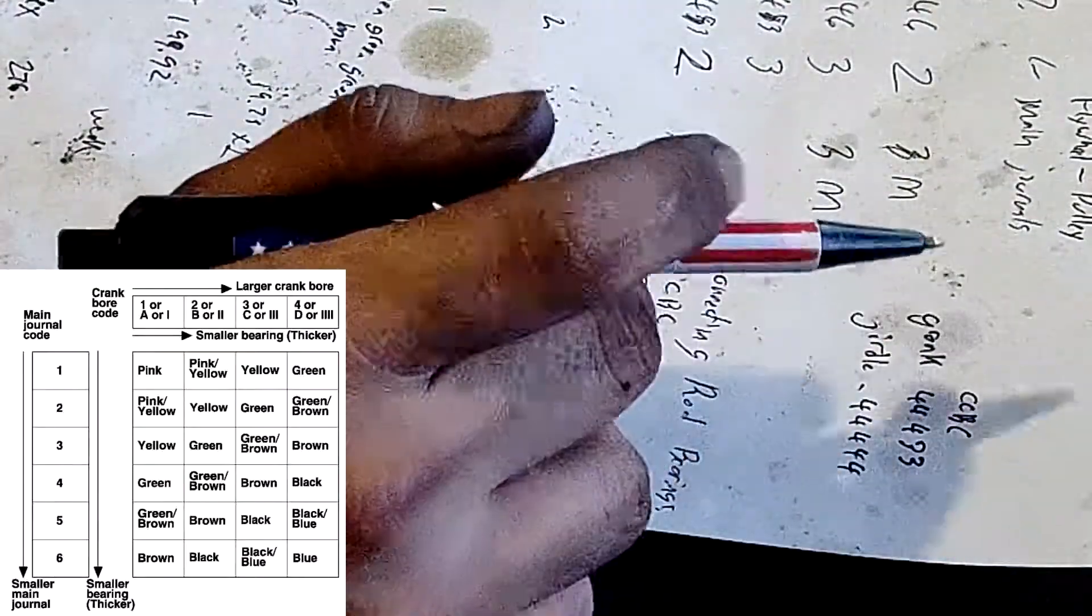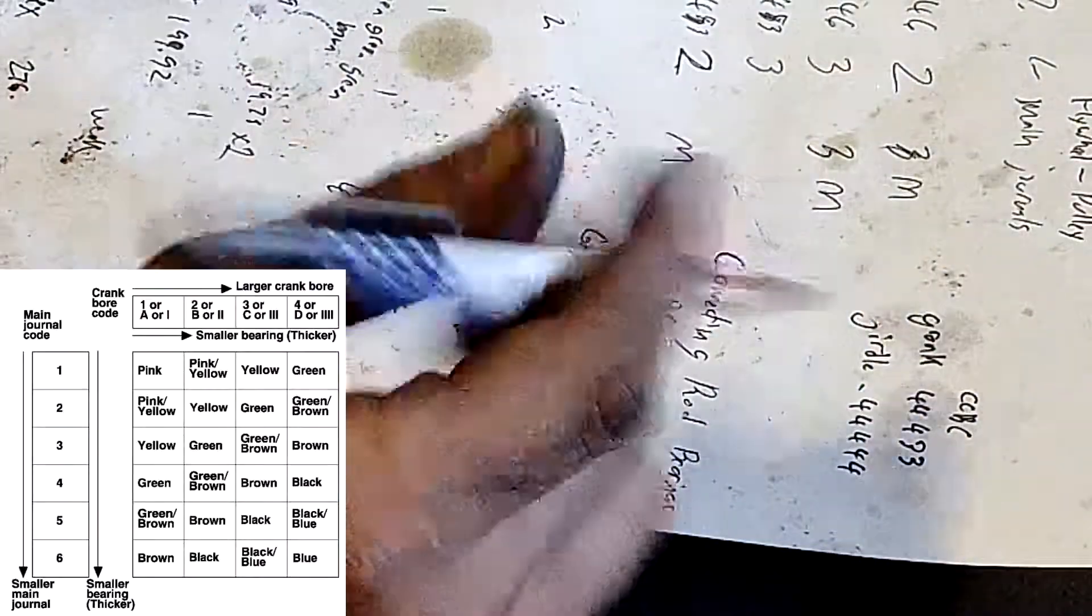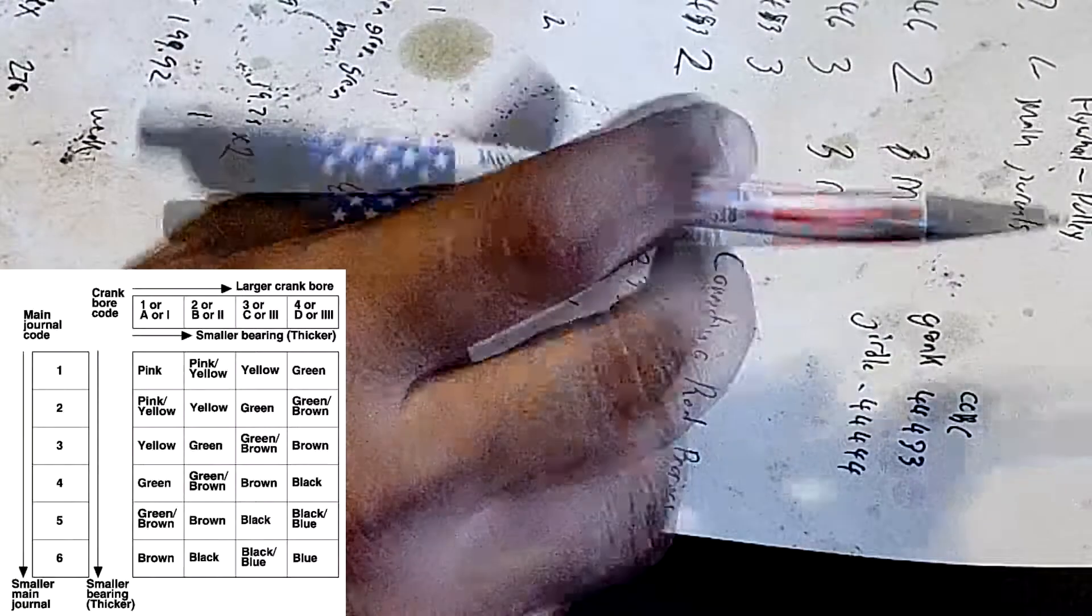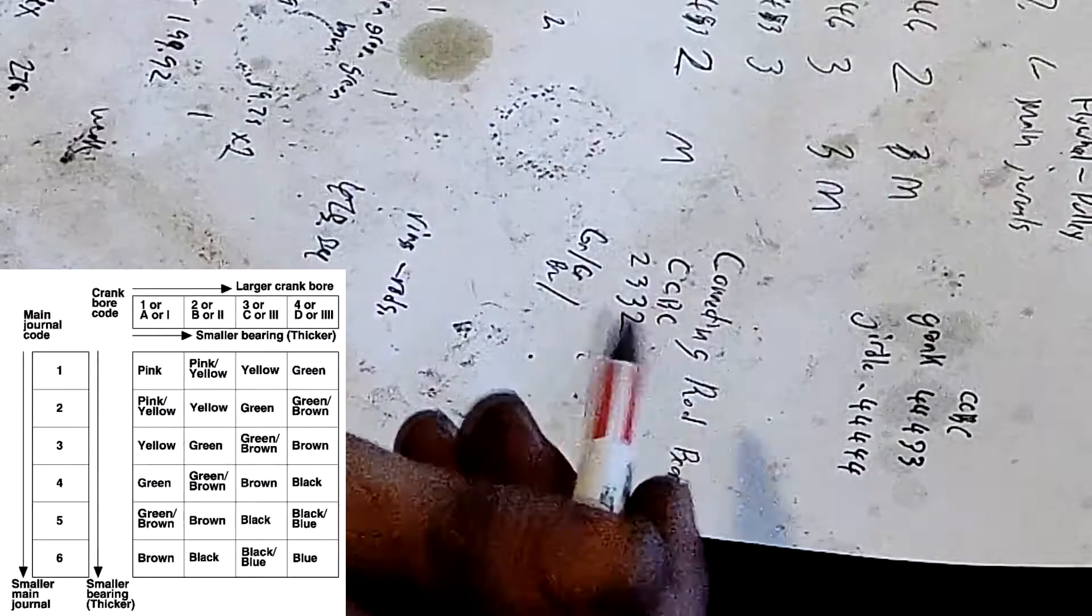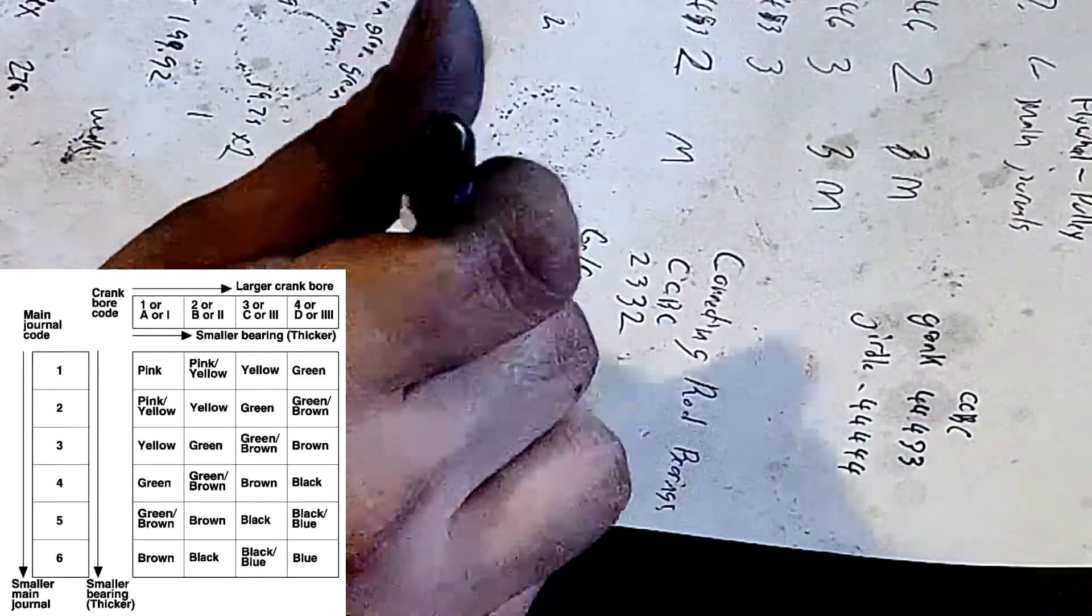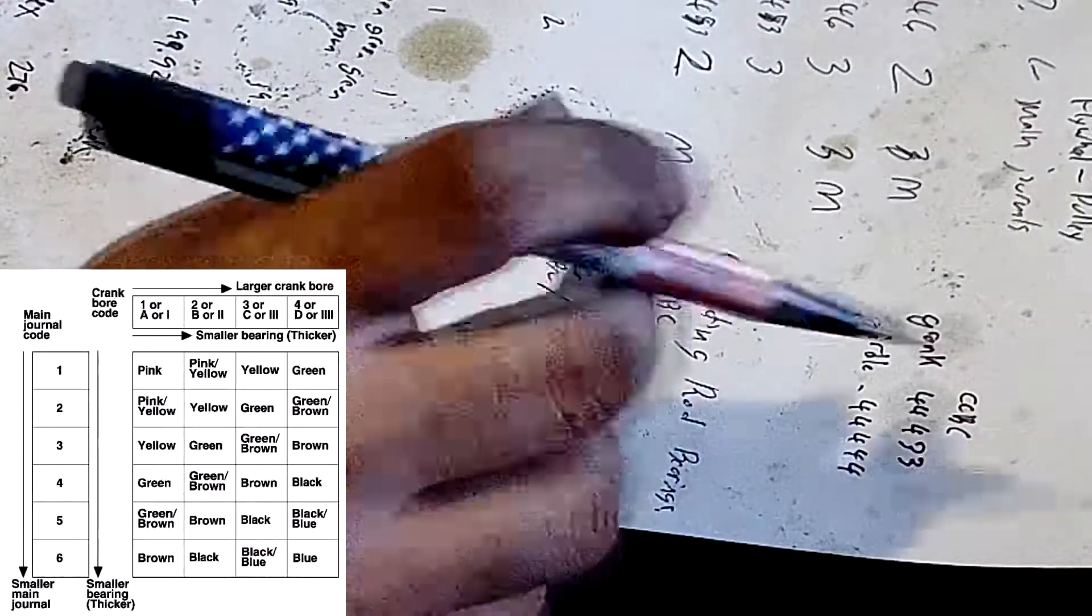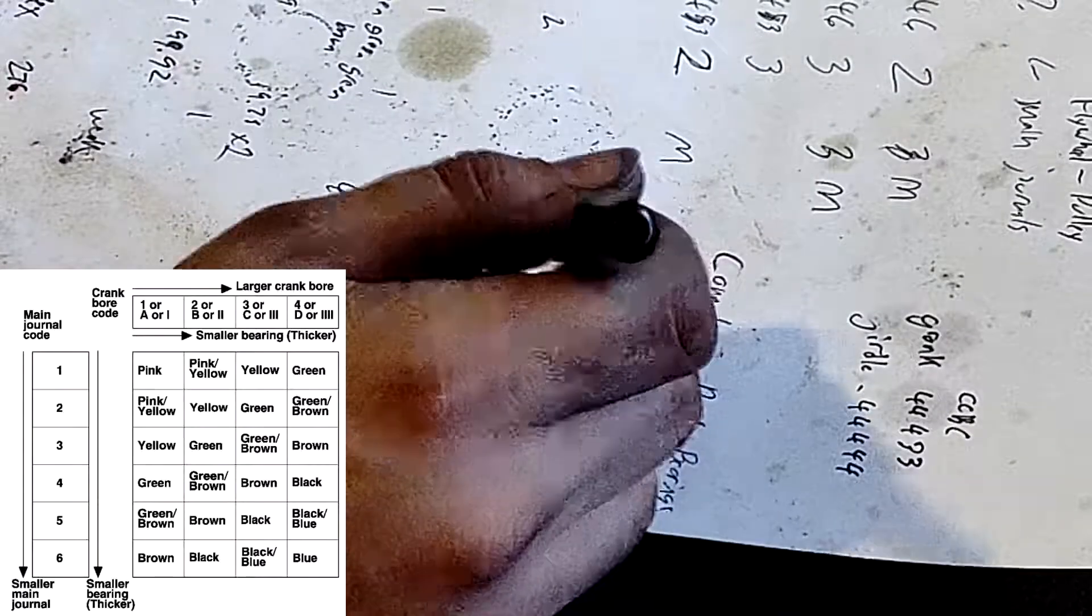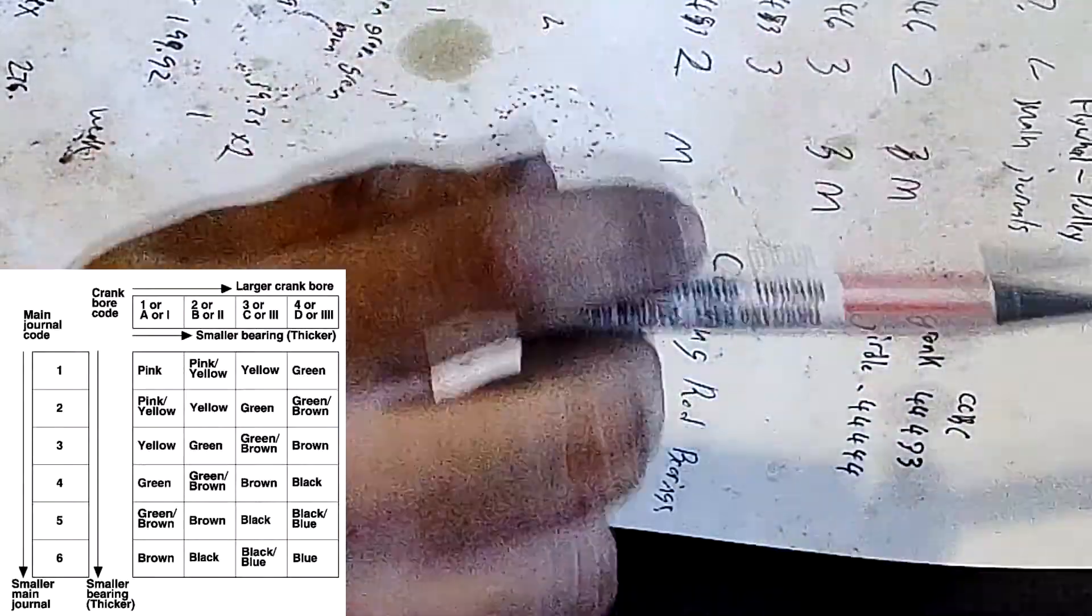Now you also want to double check your clearances with a plasti gauge when assembling and go from there. But generally with green and brown I could use either green or brown, so I'm going to buy one of each just to be sure. And you can actually mix these two like a green and a brown too - I might be able to put one green one brown just for clearance purposes. But you can never do like a yellow and a brown to get a green, you can't do that.